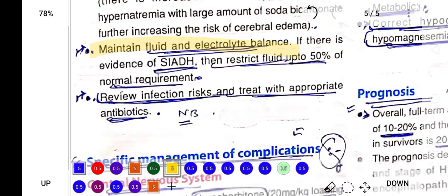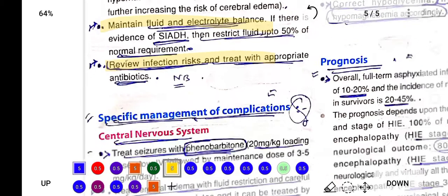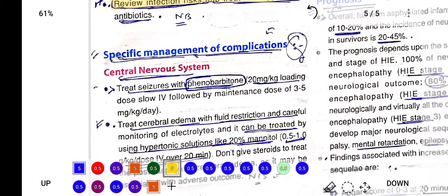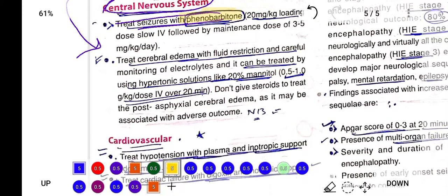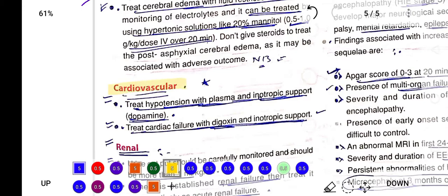The specific management of complications: the central nervous system should be assessed to treat seizures. Give phenobarbital to the baby; it is the drug of choice for seizures, especially in the baby. If there are cardiovascular complications, treat the baby with inotropics like dopamine.